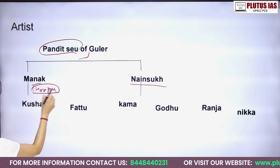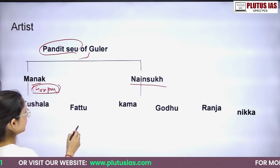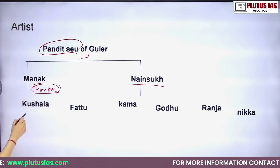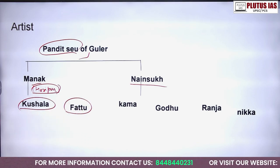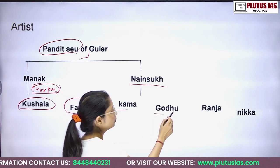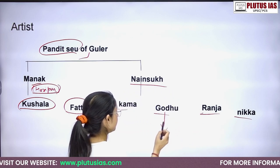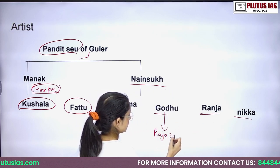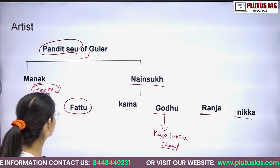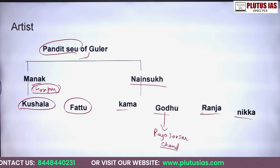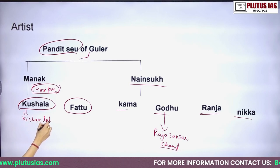They did their work in Haripur Guler, as well as under Raja Sansar Chand. Another important artist was Kusala, whose other name was Kishan Lal — their paintings are significant and we will see more of them later.